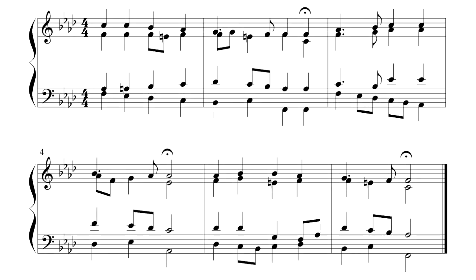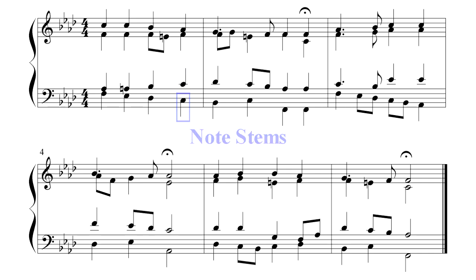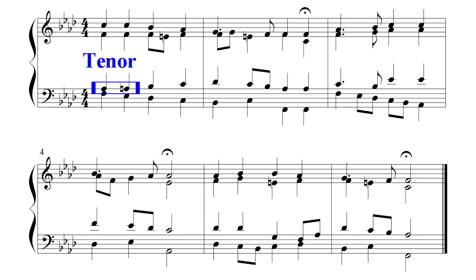Here again are the first six bars from Bach Chorale number eight, one of my favorite works from the literature. A full analysis for the entire piece is available on my website linked in the description. The goal here is to highlight some of the internal note progressions within each part. This type of music is often printed on the piano staff, with note stems pointing up or down to identify which voice is which — soprano, alto, tenor, and bass.